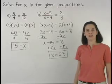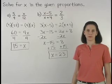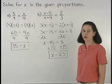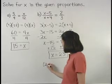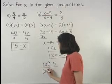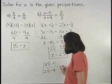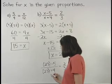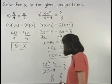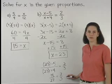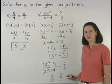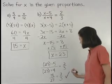Finally, it's a good idea to check the answer in these types of problems. For example, if we plug a 23 back in for the x in part B, we have 23 minus 5 over 23 plus 4 equals 2 thirds, or 18 over 27 equals 2 thirds. And 18 over 27 equals 2 thirds is a true statement because 18 over 27 reduces to 2 thirds. So our answer checks.